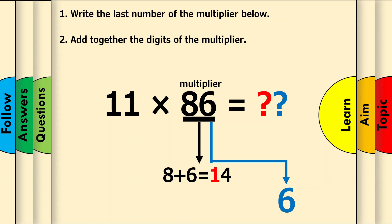Since we can only write one number down below and 14 is a two-digit number, just write the last number underneath and we will carry the 1 over to the next step.